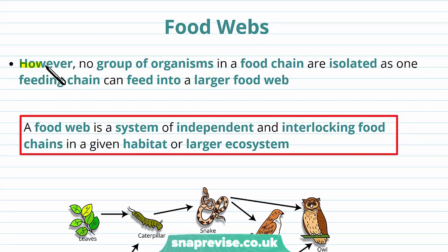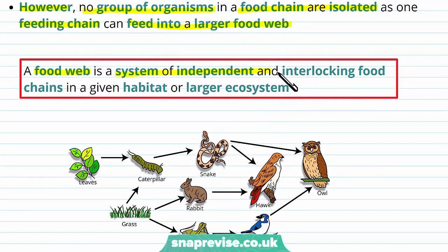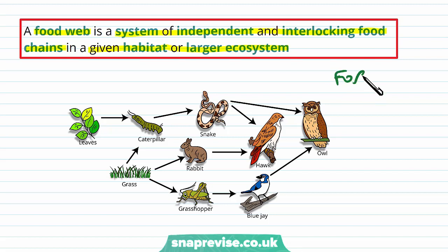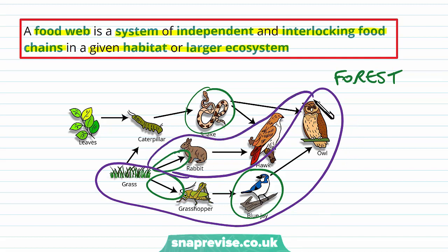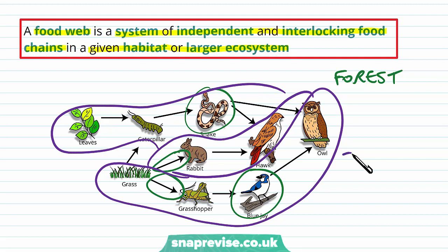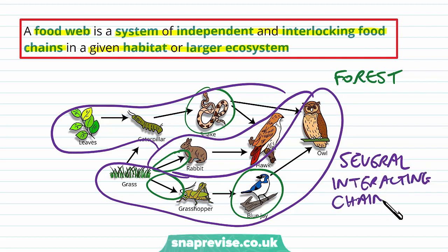Normally in life, no group of organisms in a food chain are isolated as one feeding chain from everyone else — they feed into a much larger food web with more interactions. A food web is a system of interdependent and interlocking food chains in a given habitat or larger ecosystem. In a forest, various species eat various different things, and one species doesn't always eat the same thing. For example, grass can be eaten by the rabbit or the grasshopper, and the owl can eat snakes or blue jays. Several interacting food chains is why we call this a food web.